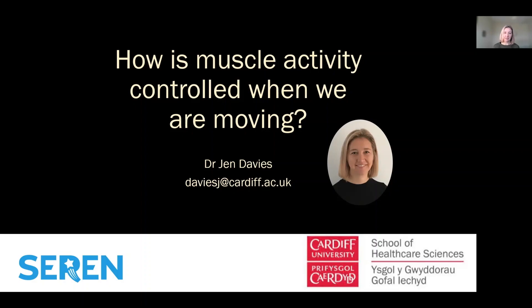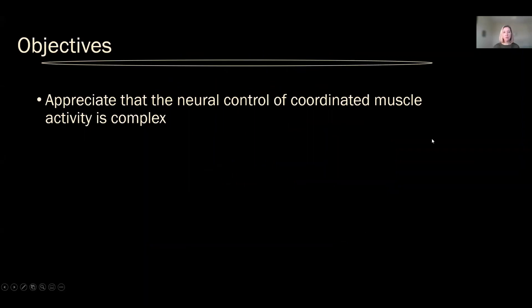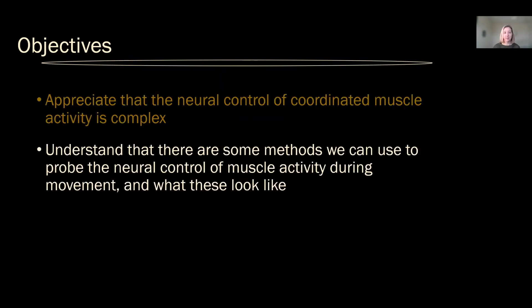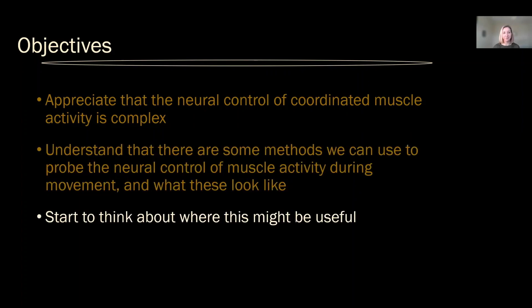What I'm really interested in is understanding how muscle activity is controlled during movements. In today's session we'll talk about how the neural control of coordinated muscle activity is complex, and despite that there are some methods we can use to probe the neural control of muscle activity during movement. I'll talk about what some of these look like and then we'll start to think about where this might be useful.